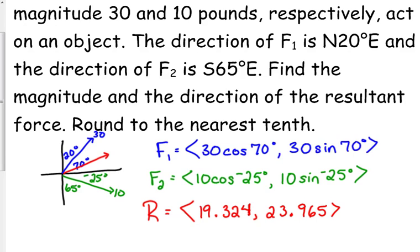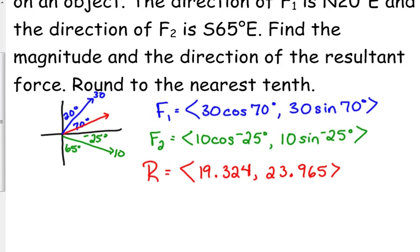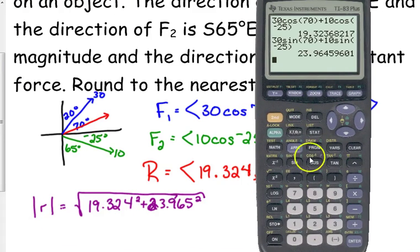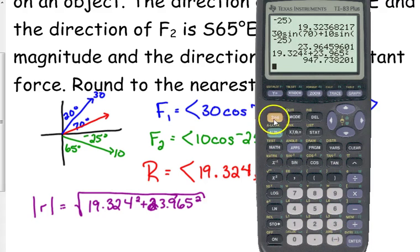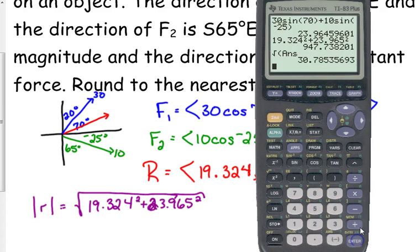So we want the magnitude in the direction though. That's just the component form. So remember how we find magnitude? We take the square root of the x component squared plus the y component squared. 19.324 squared plus 23.965 squared.